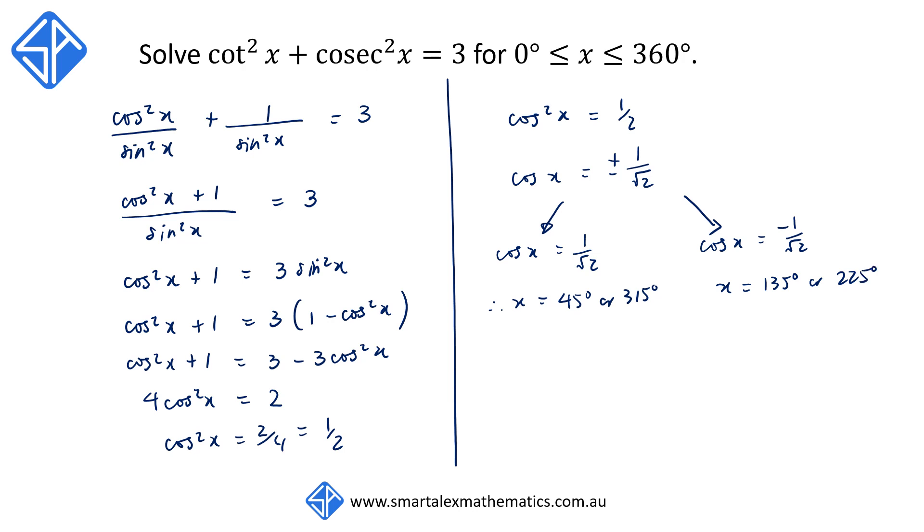So this gives us the four solutions to this trigonometric equation. Our solutions are x is equal to 45 degrees, 135 degrees, 225 degrees and 315 degrees.